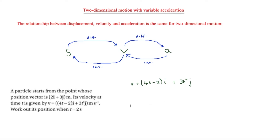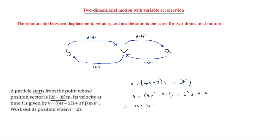Starting with v = (4t − 2)i + 3t²j, integrating gives s = (2t² − 2t)i + t³j + c. To find c, we know the starting position vector is 2i + 3j, and since it starts at t = 0, substituting t = 0 into the expression gives just c. So c = 2i + 3j.